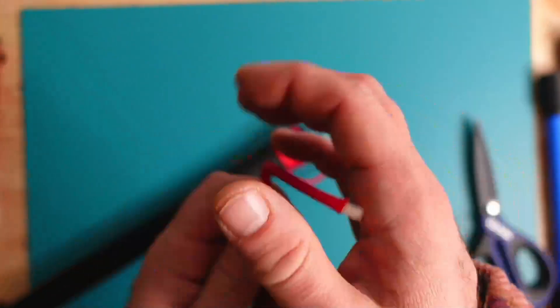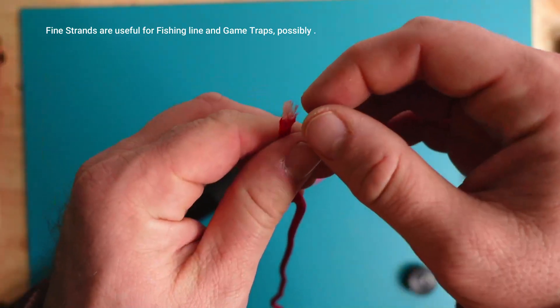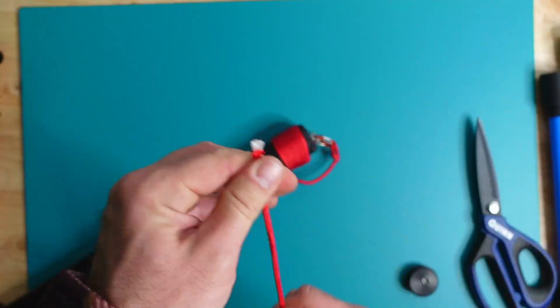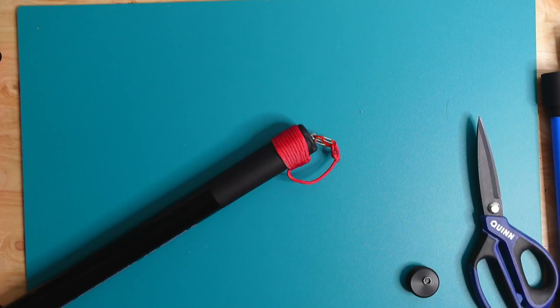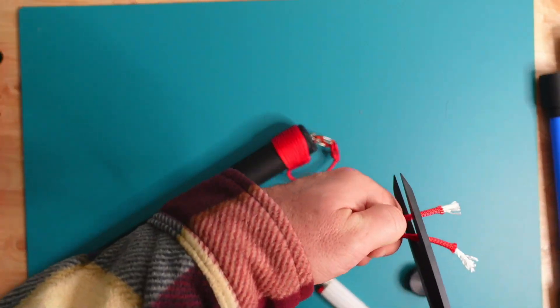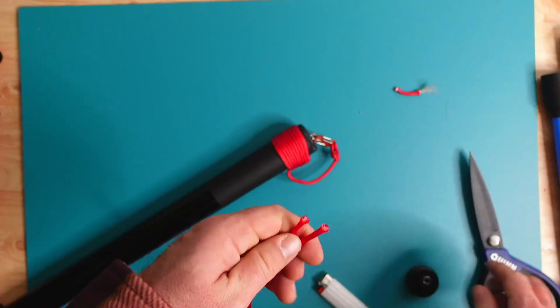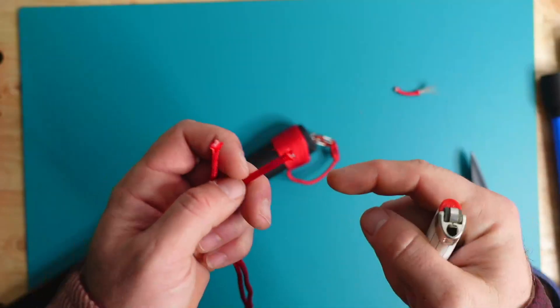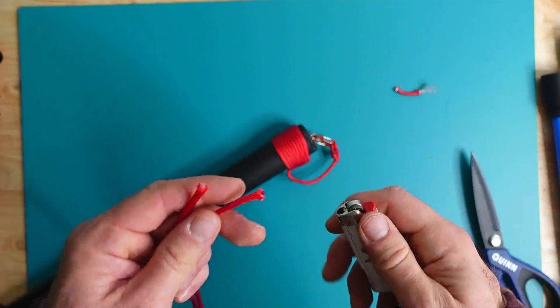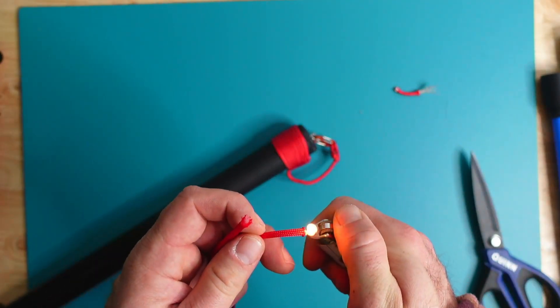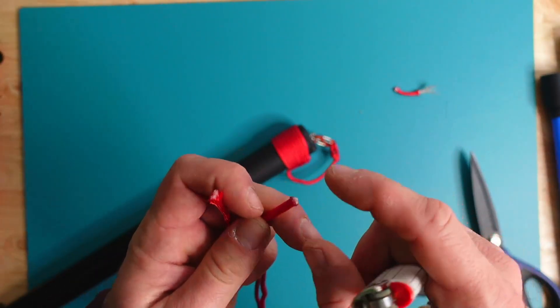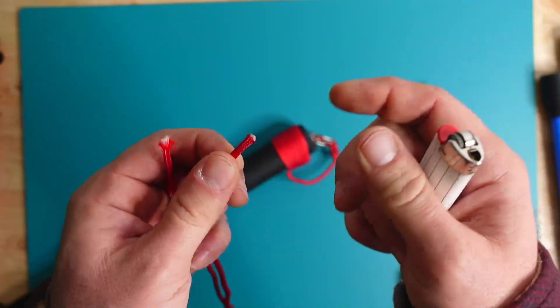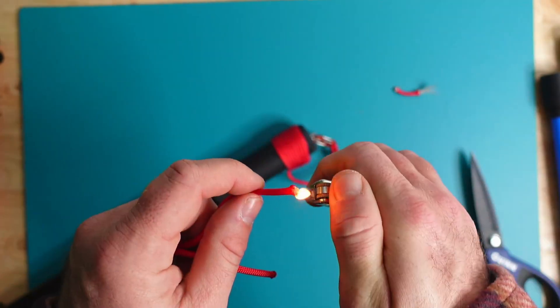The thing that really is awesome about 550 cord, but could also suck, is the fine strands inside. If we were to pull this right now, they would come out. So the first thing we want to do is grab a lighter. I'm going to take this lighter and caution you, because this is hot, and you'll burn yourself.